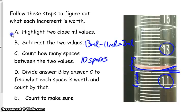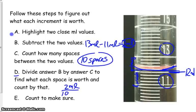Going back over here, notice that this line right here is halfway between 11 and 13. So I'm going to call that 12 milliliters right there. But if we go to step D back over here, we've got divide answer B by C. So answer B by C. We have 2 milliliters divided by 10 spaces. That equals 0.2 milliliters per space.